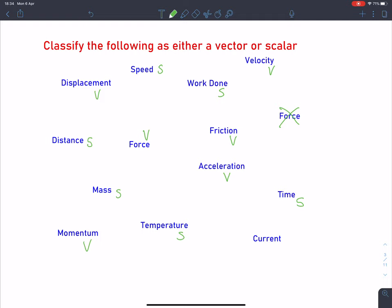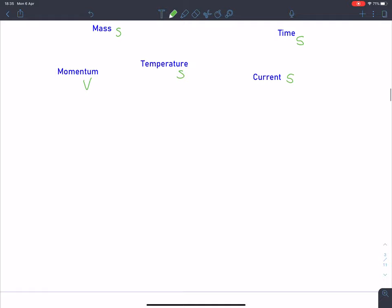Current is an interesting one. You can have current moving in one direction, you can have current moving in the other direction. What we haven't gone into fully here is some of the rules the vectors follow in terms of adding vectors and subtracting vectors. So although you might think of current having a direction, in reality, in physics, we consider that a scalar because it doesn't follow the normal rules the vectors follow. And that's what we're going to explore a bit later.